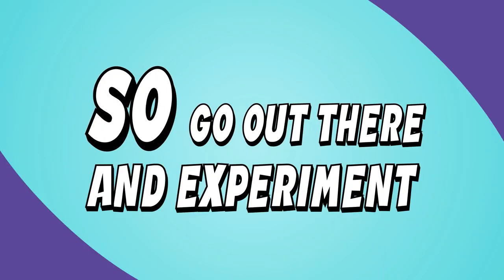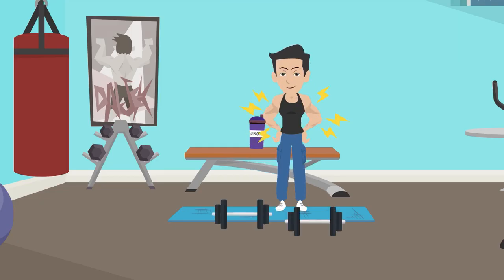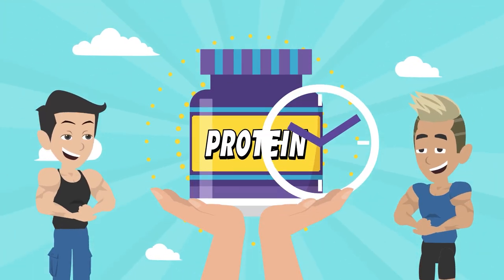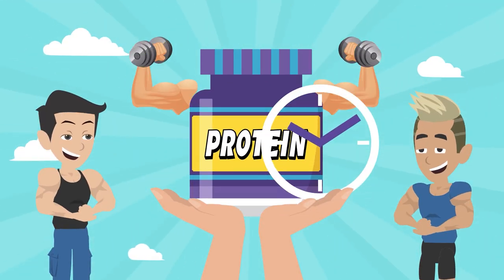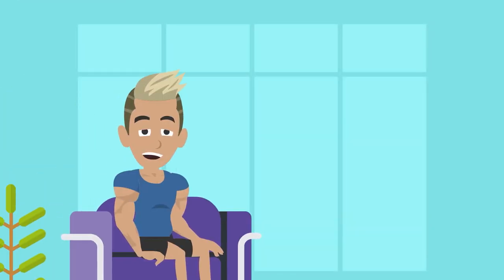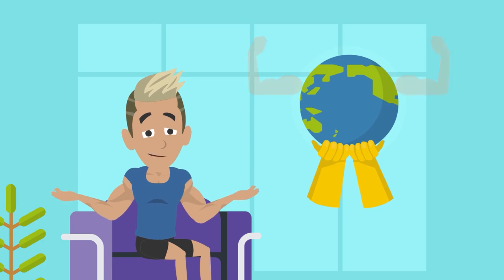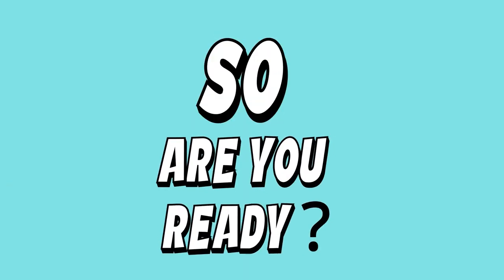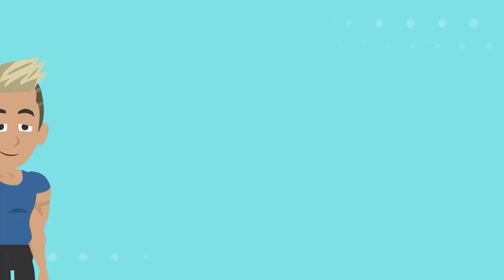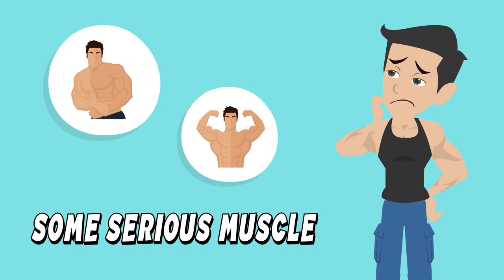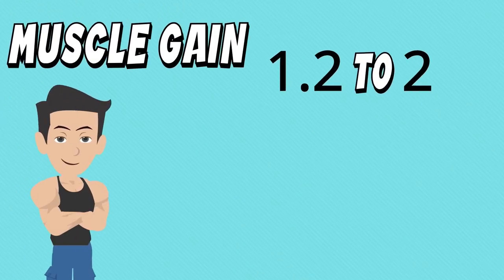Go out there and experiment, listen to your muscles, and fuel them right. Now it's time for some practical recommendations that will supercharge your gains. First, let's talk about protein intake based on different goals. If you're on a mission to build serious muscle, aim for around 1.2 to 2 grams of protein per kilogram of body weight.